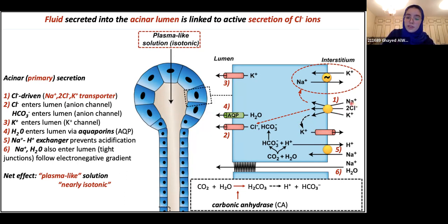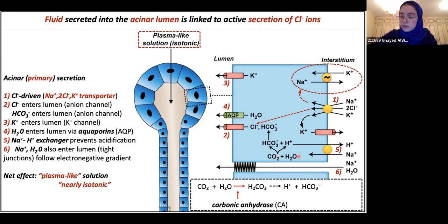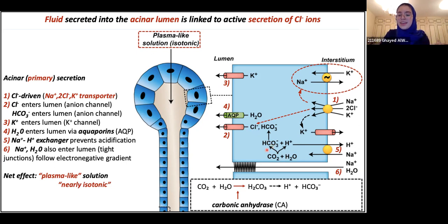Chloride comes in through the sodium-chloride-potassium transporter and goes out through an anion channel into the lumen. But chloride doesn't leave alone — it leaves with bicarbonate. This bicarbonate comes from the reaction of carbon dioxide with water inside the cell, which produces bicarbonate ions and hydrogen ions. So the bicarbonate leaving with chloride comes from this intracellular reaction.